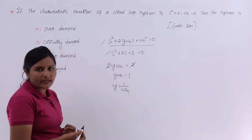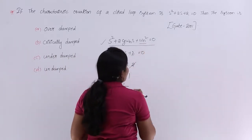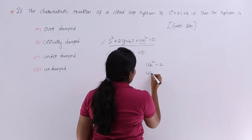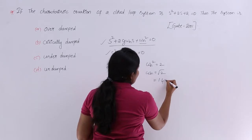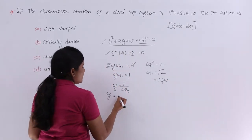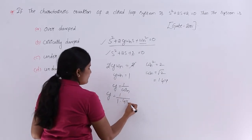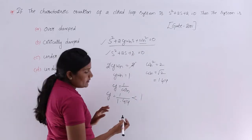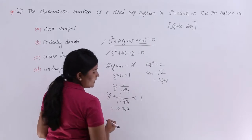We do not know the value of ωn, so I am going to compare the constant terms: ωn² = 2, therefore ωn = √2 ≈ 1.414. Now zeta is equivalent to 1 divided by 1.414, which is less than 1.